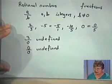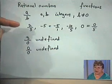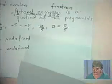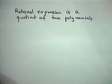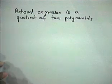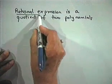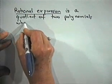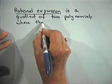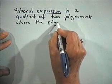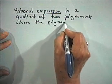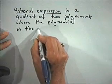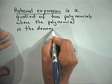Remembering this — where we have a numerator over a denominator — we're going to think about rational expressions in the same way. A rational expression is a quotient of two polynomials where the polynomial in the denominator is not equal to 0, because remember, we cannot divide by 0.